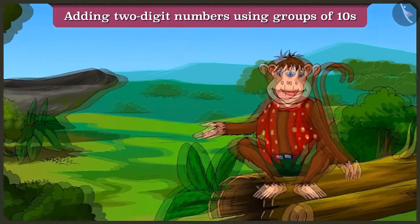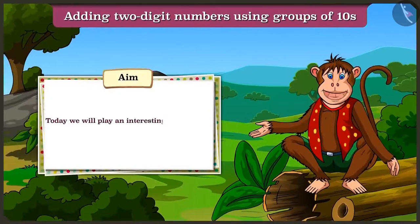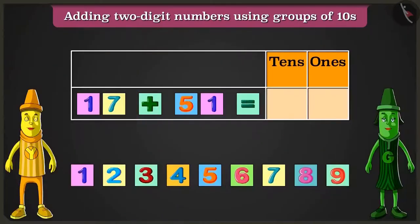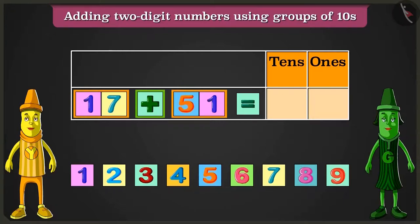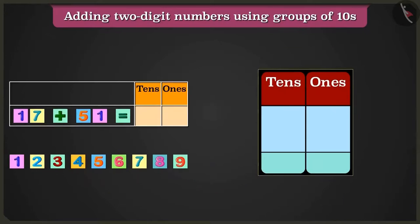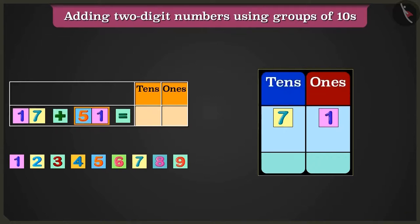Friends, today we will play an interesting game involving the addition of two-digit numbers. Greeny, look — this is a number block. The numbers made out of these blocks, seventeen and fifty-one, have to be added. You can add these numbers by writing them in the table of ones and tens. For seventeen, in the box of tens write one and in the box of ones write seven. For fifty-one, in the tens box write five and in the ones box write one.